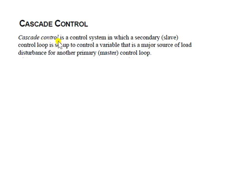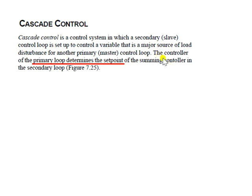Cascade control is a control system in which a secondary or slave control loop is set up to control the variable that is a major source of load disturbance for a primary or master control loop. The controller of the primary loop determines the set point of the secondary controller in the secondary loop. The following figure shows both primary and secondary loops.